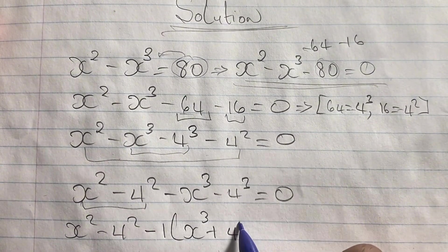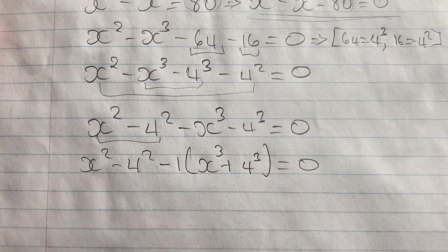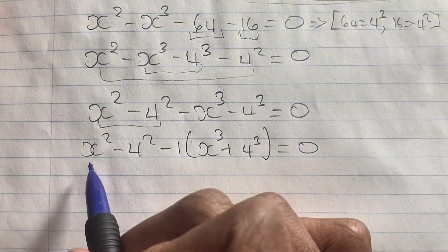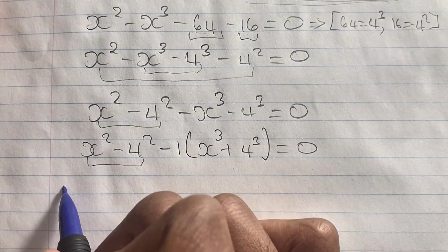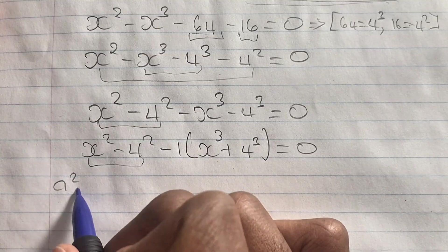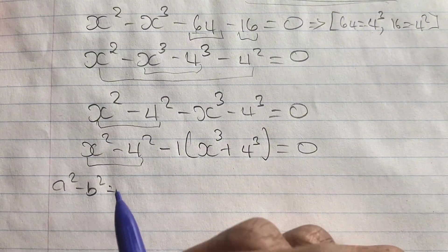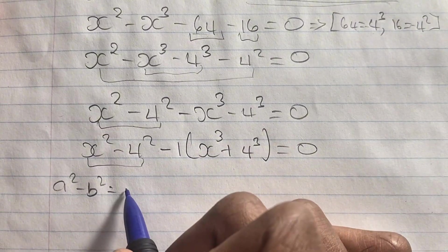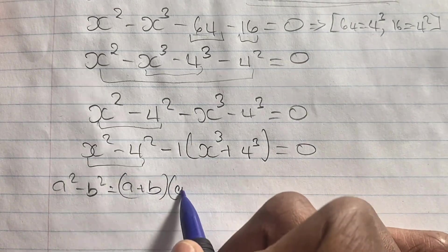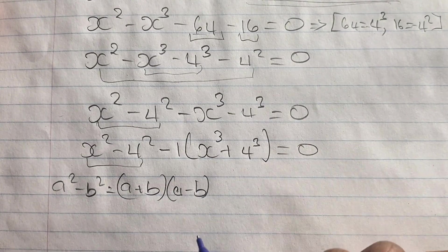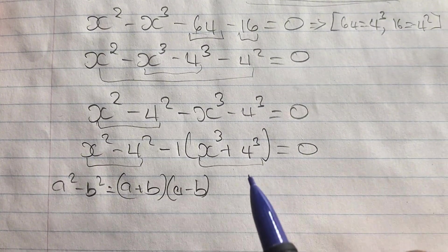We have x squared minus four squared, which is the difference of two squares. Recalling our algebra, a squared minus b squared equals (a + b)(a − b). That is how we expand the difference of two squares.